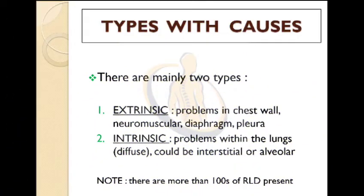Types with causes: there are mainly two types — extrinsic and intrinsic. In extrinsic, the problem is in the chest wall, neuromuscular, diaphragm, and pleura. In intrinsic, the problem is within the lungs — diffuse, could be interstitial or alveolar.